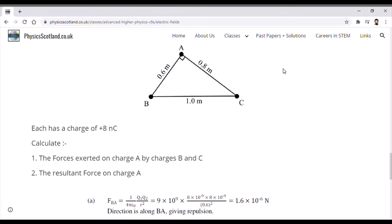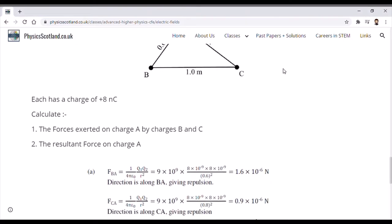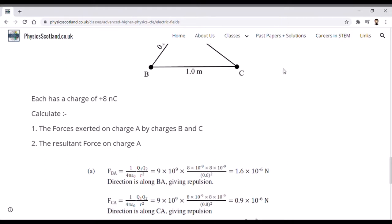We repeat that process again for A and C. We've got the same calculation except it is now 0.8 squared on the bottom because of a different distance, so we get 0.9 times 10 to the minus 6 newtons for the force between C and A. The direction again is along the line CA, and again it's giving repulsion.